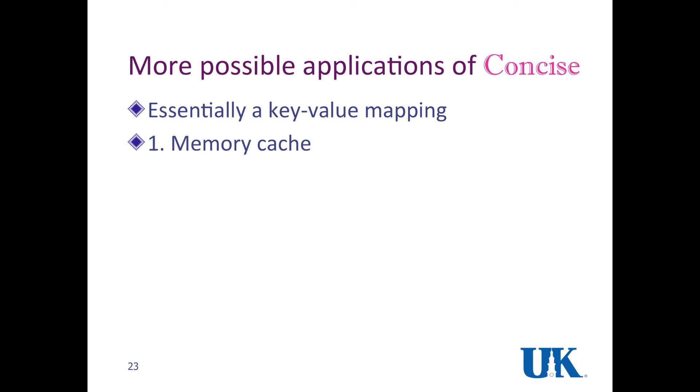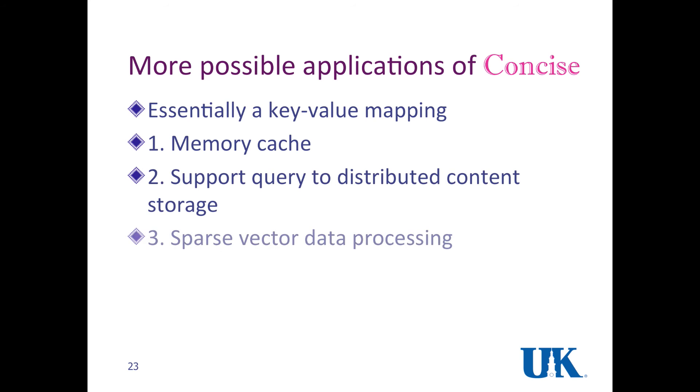Concise is actually essentially key value mapping. It may possibly have more applications such as memory cache or query to distribute content storage or Spark's vector processing in data mining, but we don't know. We haven't started the investigation. I'd like to take questions. Thank you.